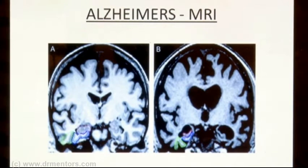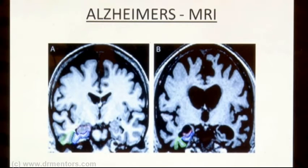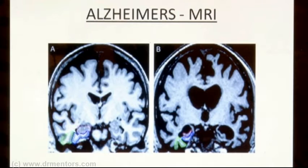That means cerebral atrophy is present, which causes dilatation of the ventricles with prominence of the sulci and gyri. And as you can see on the SPECT scan, there is reduced uptake in the temporal and parietal lobe — a classical feature of Alzheimer's disease.